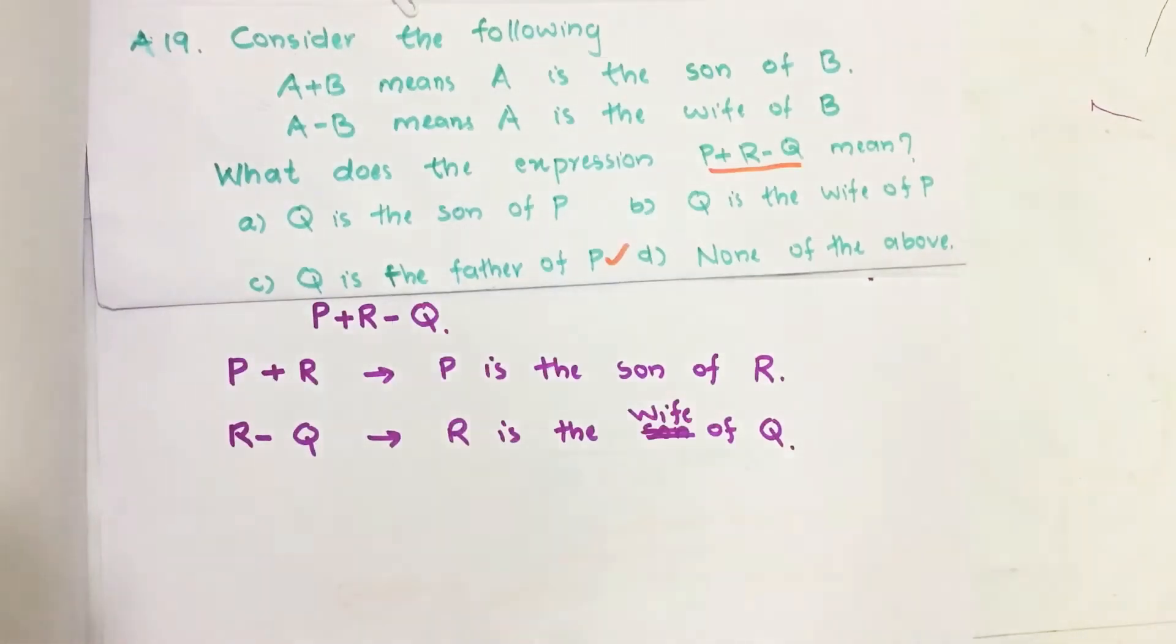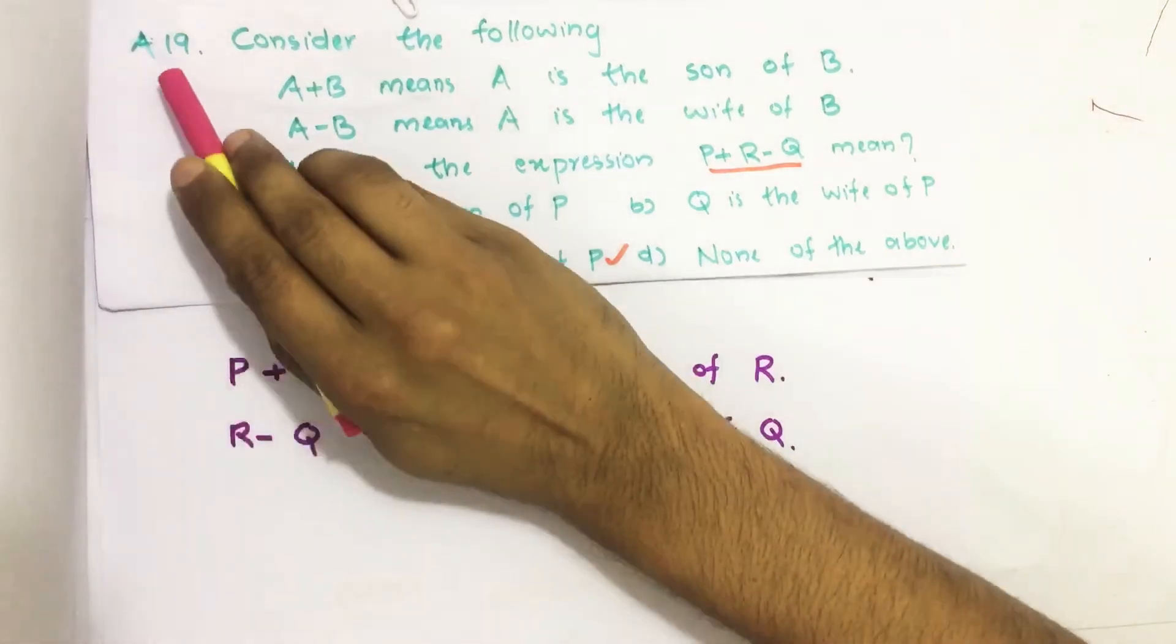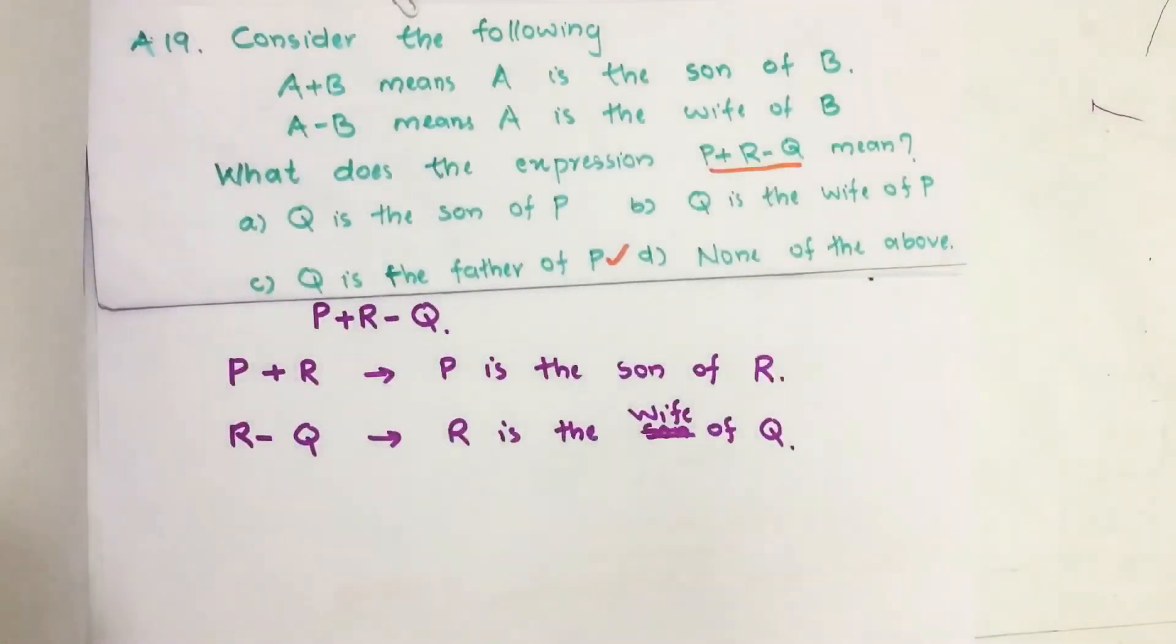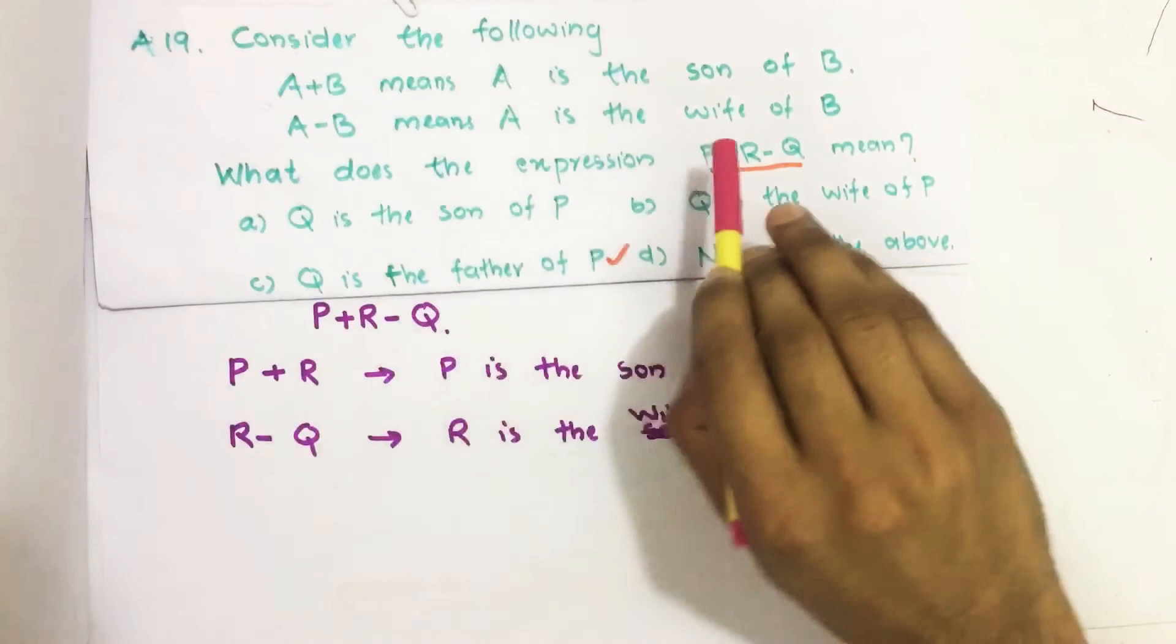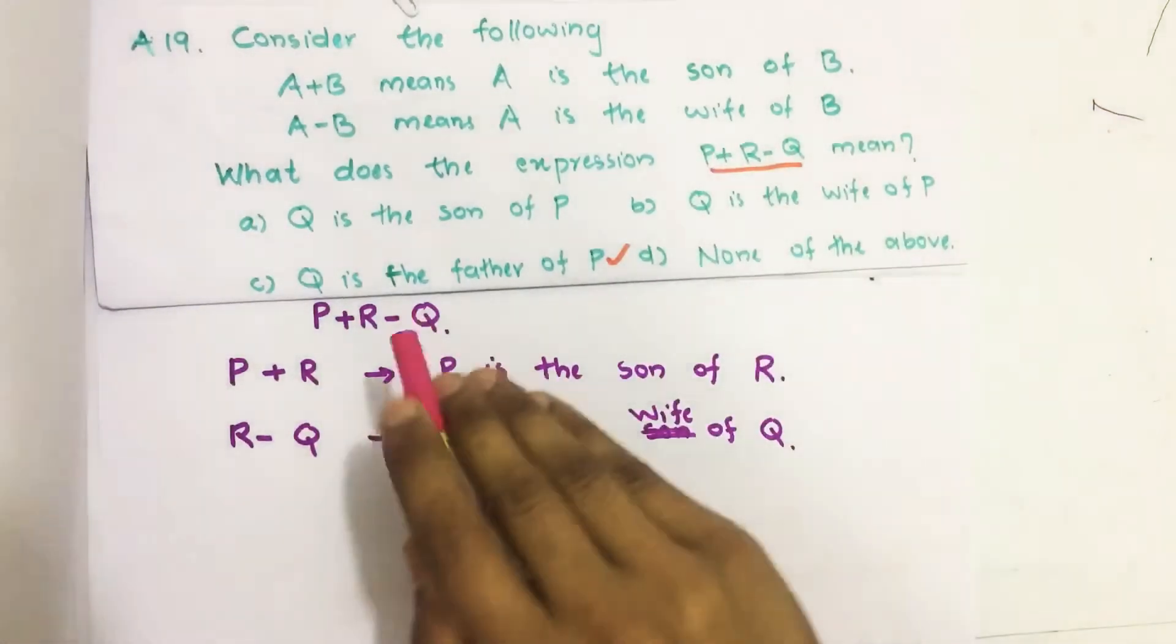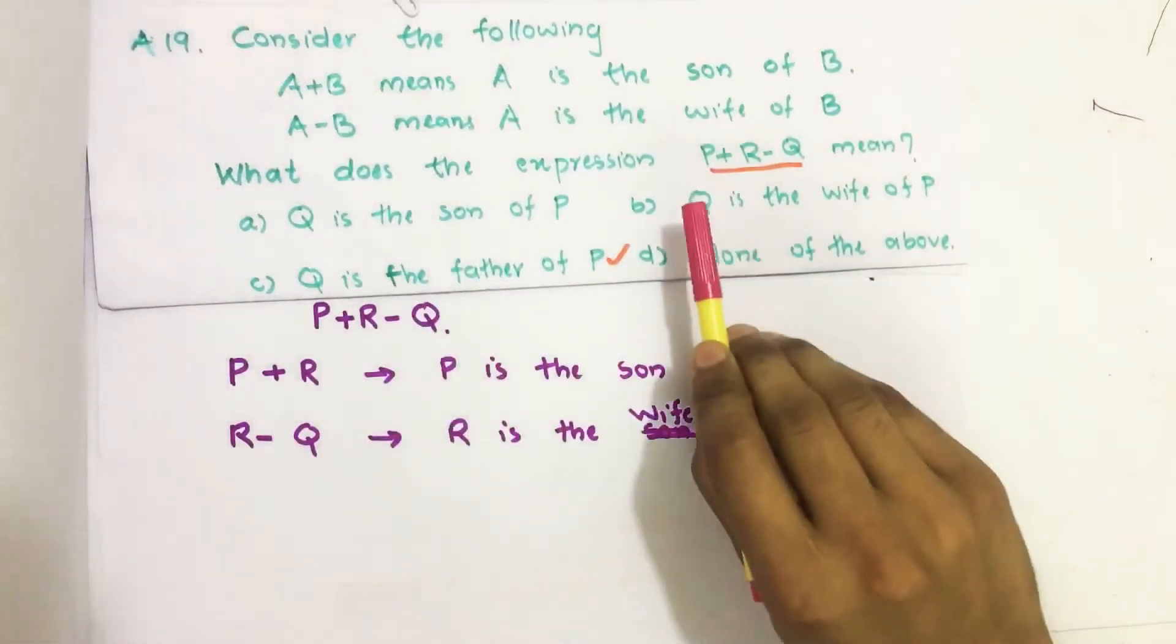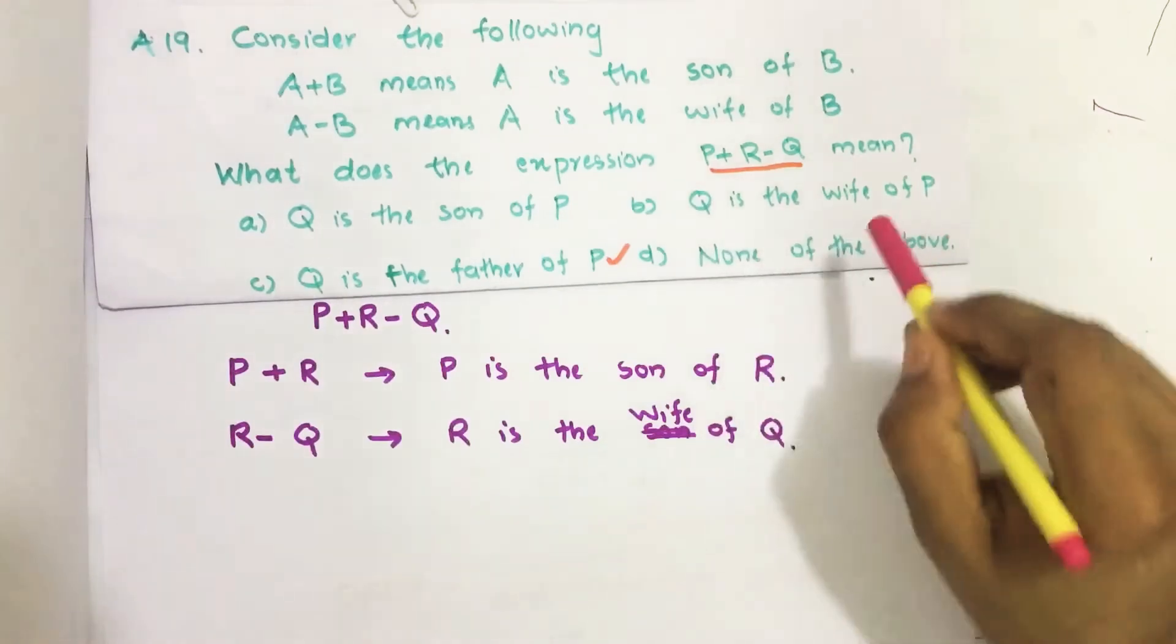Hello everyone, I am going to solve 2017 GATE question number 19. Consider the following: A+B means A is the son of B, and A-B means A is the wife of B. What does the expression P+R-Q mean?